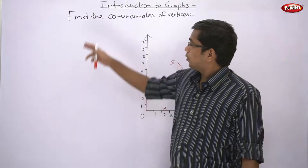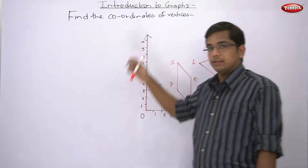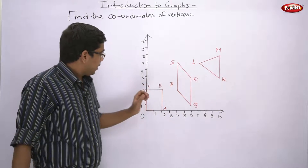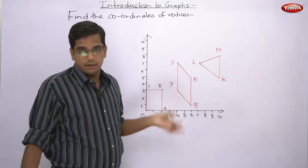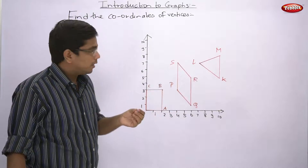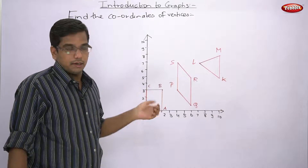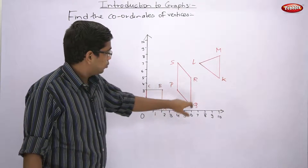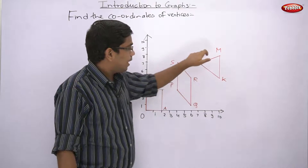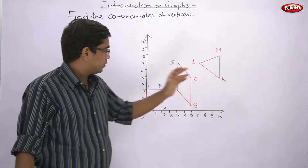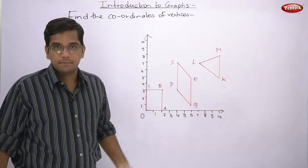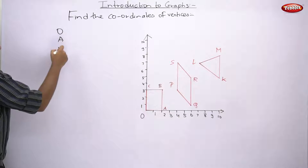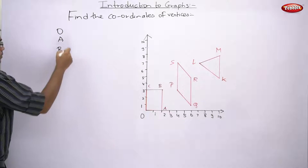Next question: find the coordinates of vertices. Here an x-y axis is given with three closed figures. We need to find the coordinates of their vertices: O, A, B, C (first figure), P, Q, R, S (second figure), and K, L, M (third figure). For the rectangle O, A, B, C — O is the origin, and origin lies on both x and y axes, so O's coordinates are obviously (0, 0).